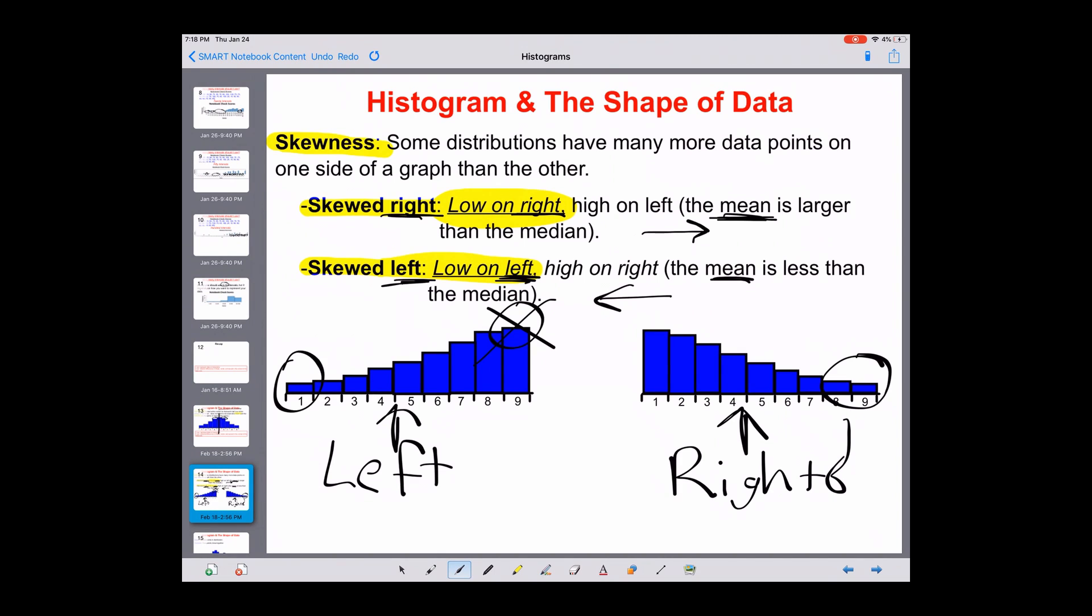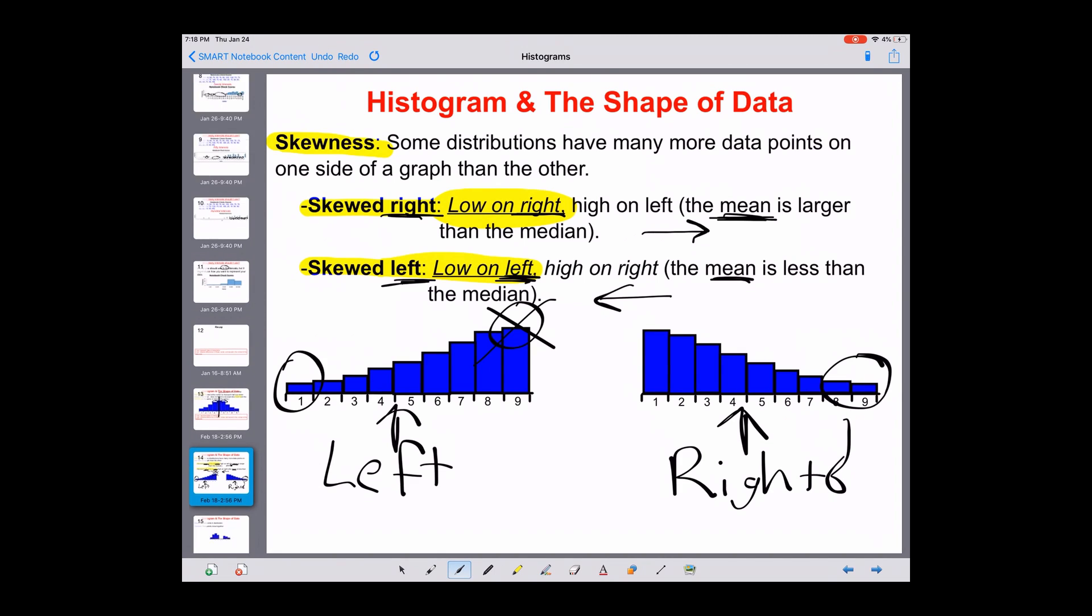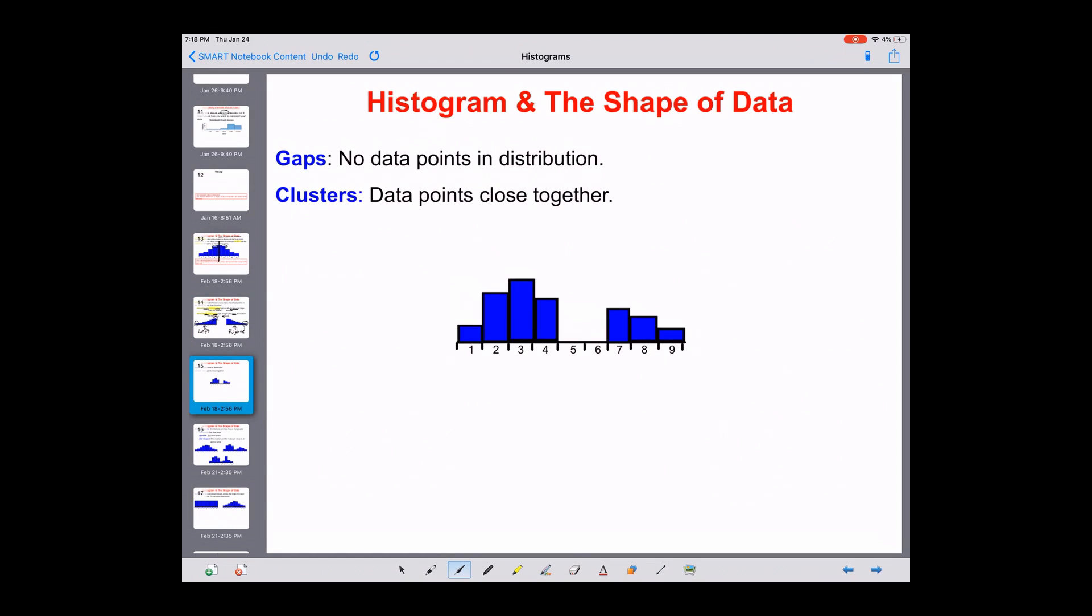Here are some more shapes we can talk about. We can talk about gaps—gaps are just when there are no data points in the distribution of the data. Then the clusters, which is what kind of makes the gaps—the clusters are these pieces right here in the histograms, the data points that are all grouped together.